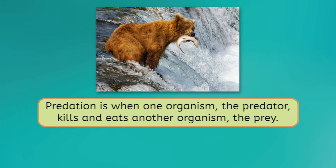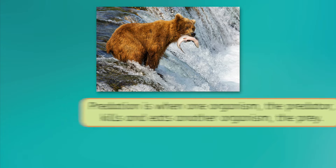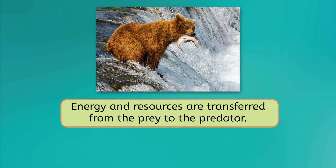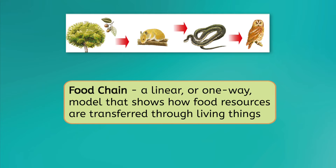A common characteristic of symbiotic relationships is that the members involved generally survive the interaction. However, not all interactions end this way. Predation is when one organism, the predator, kills and eats another organism, the prey. As a result, energy and resources are transferred from the prey to the predator. This exchange can be traced using a food chain, which is a linear or one-way model that shows how food resources are transferred through living things.